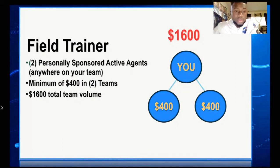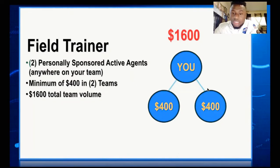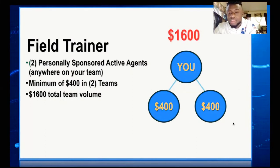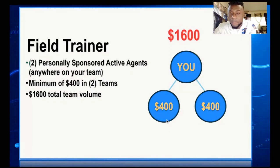So first, you sign 2 people directly below you. After that, you need 1600 in volume. Each leg of your team must have a minimum of 400. You need a minimum of 2 legs, and each leg must have at least 400. If one leg has 1000 but the other has 45 — that 45 is not 400 — then you won't get the promotion that month, because the minimum for each leg is 400.